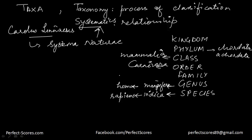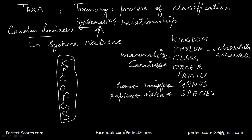So that is something you have to remember: kingdom, phylum, class, order, family, genus, and species. It's better if you remember this order. You can go from top to bottom or bottom to top, but you need to remember this order as a student of biology.